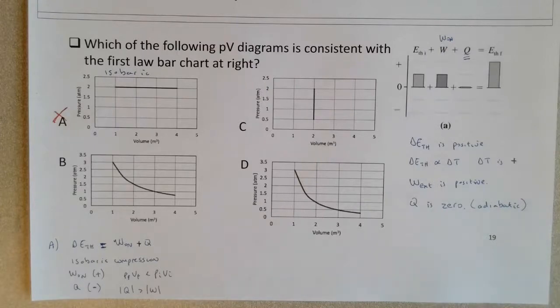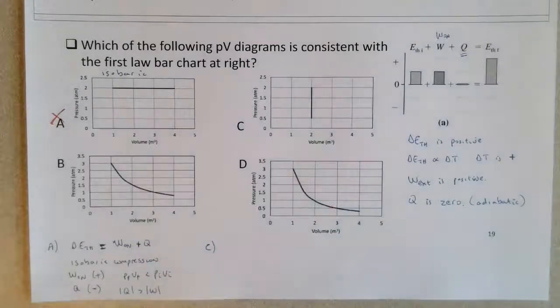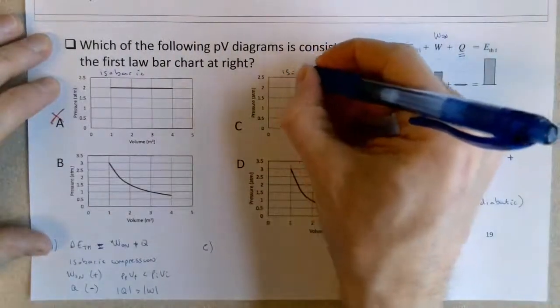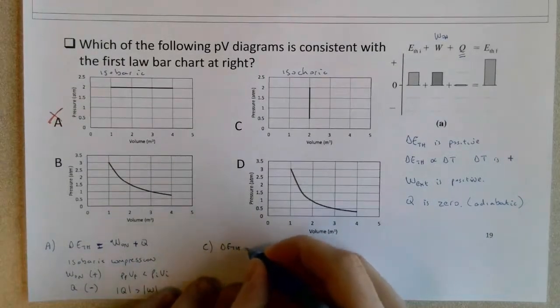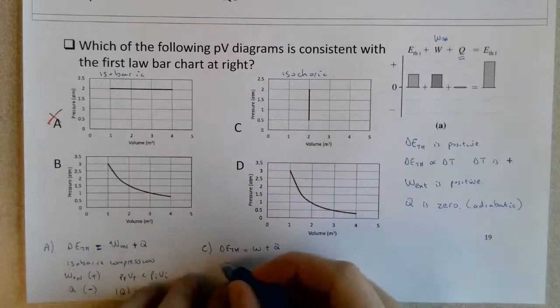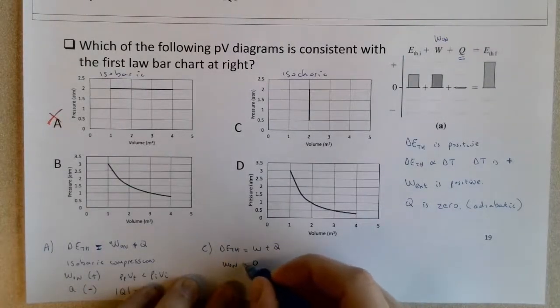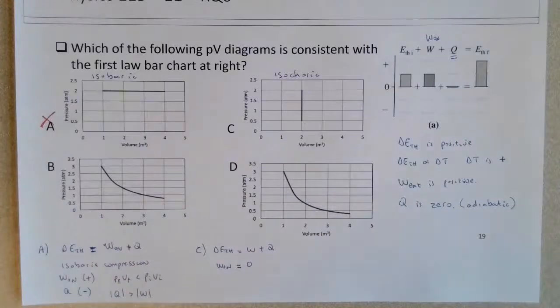Moving on, I'll go to C just because it's an easier process to analyze than B. So C is an isochoric process. It's constant volume as seen in the graph. So in a constant volume process, if we think about delta E_TH equals work on plus Q, what's interesting in an isochoric process is the work is zero. For that reason alone, you could rule out choice C because the work in the first law bar chart is positive, but for all isochoric processes the work is zero. There's no area underneath this particular line. There's no expansion, there's no compression. Basically there's no delta V.